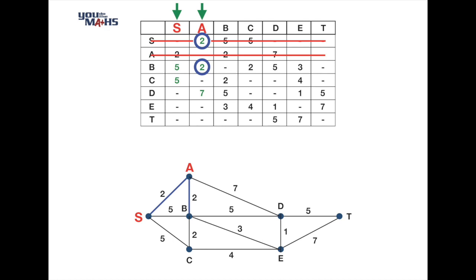We highlight the edge connecting A to B, cross out row B in the table, and now look at the entries in columns S, A, and B to find the smallest number. The smallest number is a 2 in column B, which connects vertex B to vertex C.